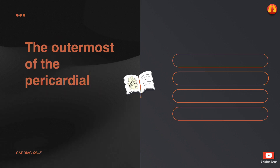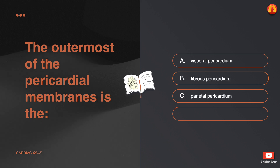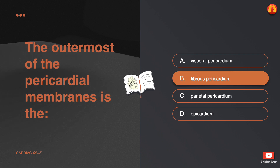The outermost of the pericardial membranes is the: A. Visceral pericardium. B. Fibrous pericardium. C. Parietal pericardium. D. Epicardium. The correct answer is: fibrous pericardium.